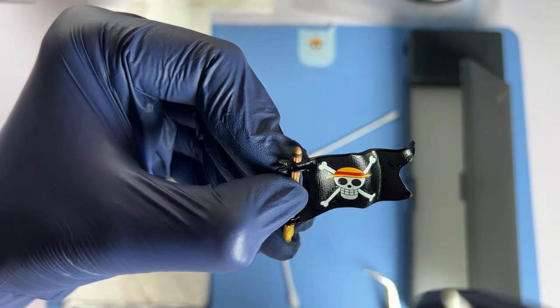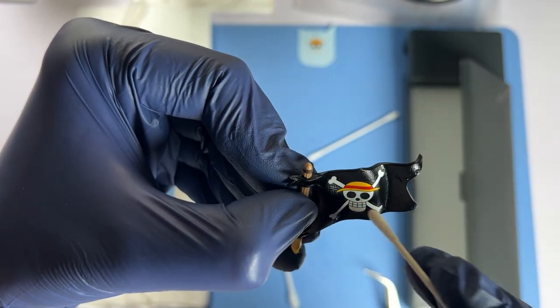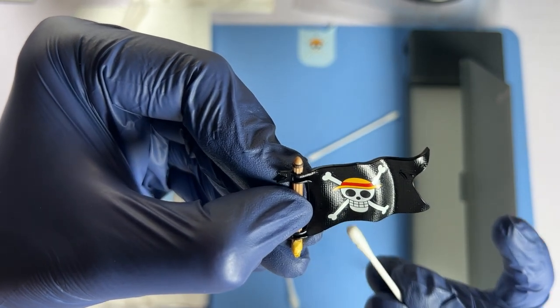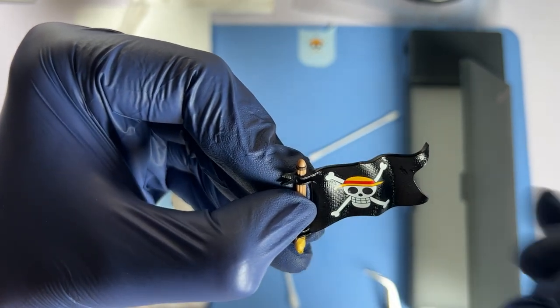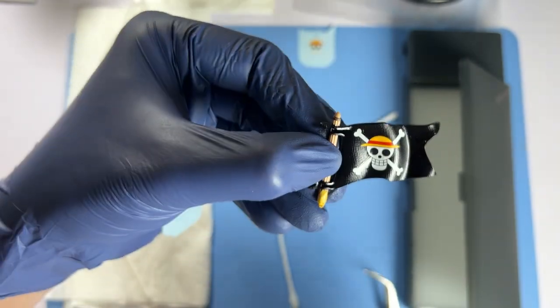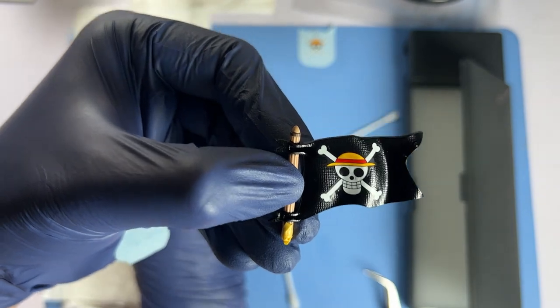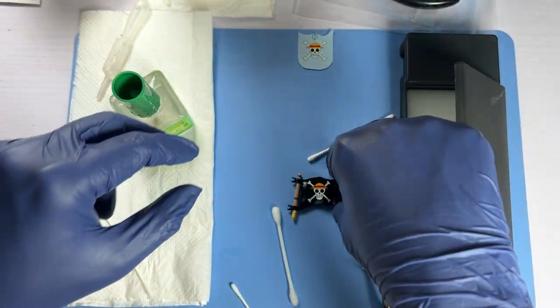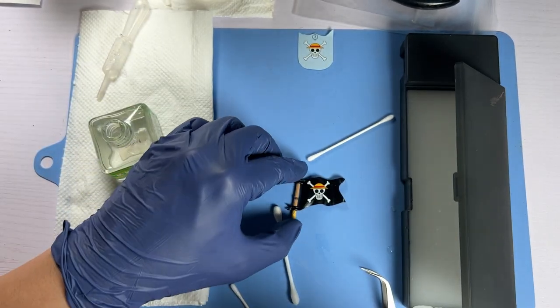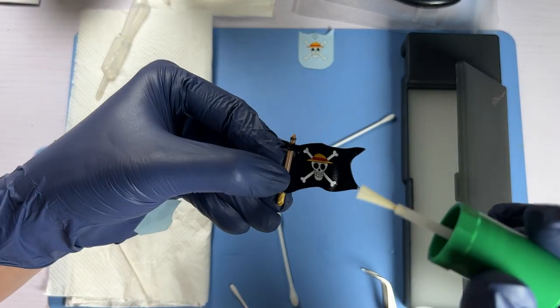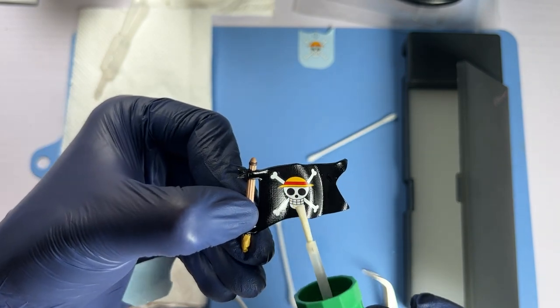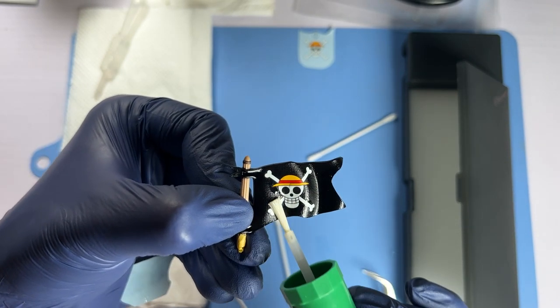Apart from using a cotton bud to make the water decal flush with the part's surface, there's actually another step to this flattening process that involves the use of a softening agent called Mr. Mark Softer. Why do we need to use this softening agent? Its main function is to enable decals to conform to rough and curved surfaces.